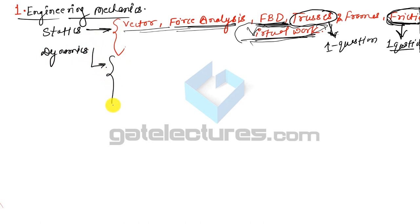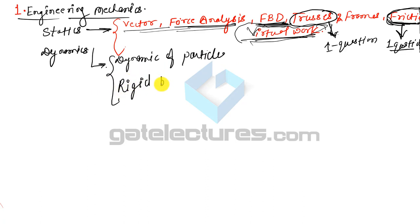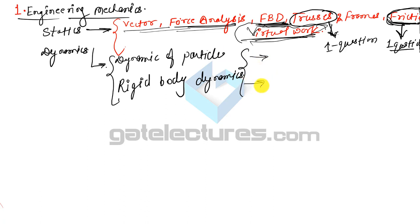In Dynamics, the content is divided into two parts: Dynamics of Particles and Dynamics of Rigid Body. Both Kinematics and Kinetics are studied in dynamics. Topics include: kinematics of particles, kinematics of rigid body, kinetics of particles, and kinetics of rigid body. Kinematics deals with space-time relationships — position, velocity, and acceleration analysis.